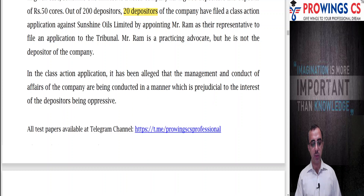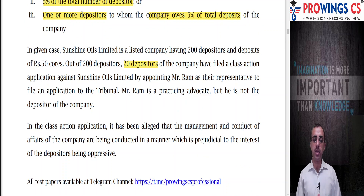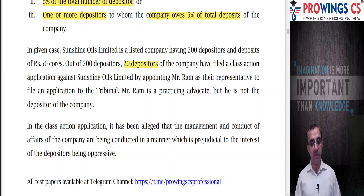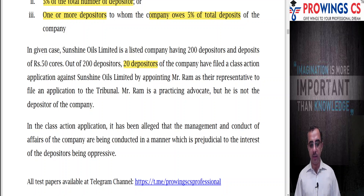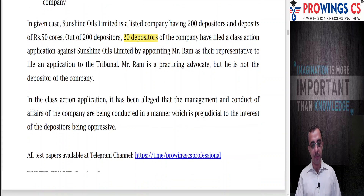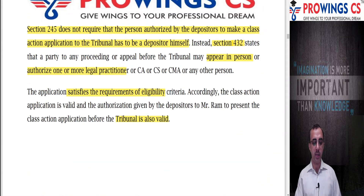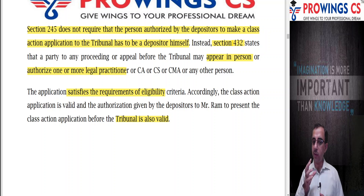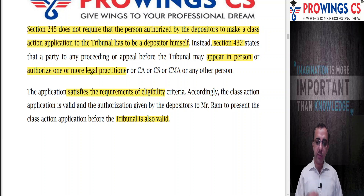In the given case, Sunshine Oils Limited is a listed company with 200 depositors depositing 50 crores. Out of 200 depositors, 20 can file a class action. Mr. Ram is a practicing advocate but not a depositor himself. Section 245 does not require that the person authorized by the depositors to make the class action application to the tribunal must be a depositor himself. Section 432 says that a party to any proceeding before the tribunal may appear in person or authorize a legal practitioner including CA or CMA.